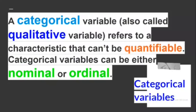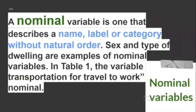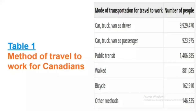Categorical variables: a categorical variable, also called a qualitative variable, refers to a characteristic that can't be quantifiable. Categorical variables can be either nominal or ordinal. A nominal variable is one that describes a name, label, or category without natural order. Sex and type of dwelling are examples of nominal variables. The variable 'mode of transportation for travel to work' is also nominal.